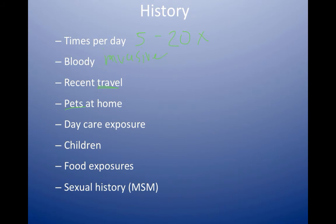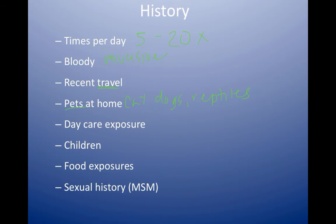Pets at home can also be a source of diarrhea — not only cats and dogs, but you also want to ask about reptiles. Snakes, turtles, lizards, and fish can carry salmonella. In infectious diseases, we get really specific: you want to know if the dog is a puppy or the cat is a kitten, because there are differences depending on the animal's age.